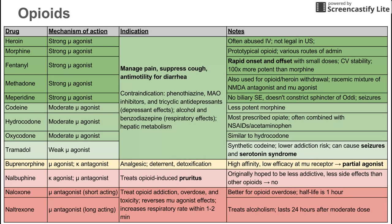Codeine is a slightly weaker mu agonist. It's pretty much a less potent morphine, also a pretty prototypical opioid. Hydrocodone is the next one — it's the most prescribed of the ones on this list, often combined with acetaminophen and NSAIDs. Oxycodone is very similar to hydrocodone, also a moderate mu agonist.